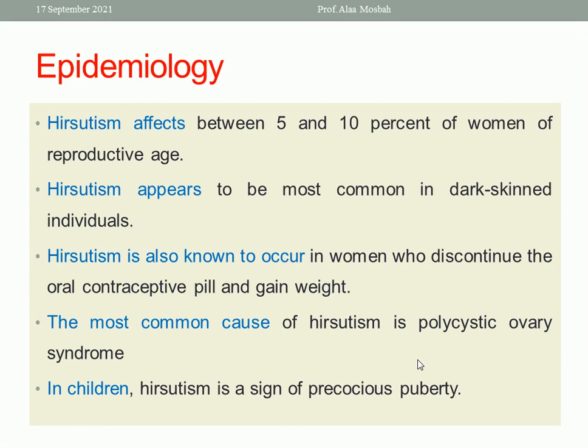Hirsutism affects between 5 to 10% of women of reproductive age and is more common in dark-skinned individuals. It commonly occurs in women who recently discontinue oral contraceptive pills and who gain weight, because obesity decreases sex hormone binding globulin, which leads to increased free testosterone, causing Hirsutism. The most common cause is polycystic ovarian syndrome. In children, Hirsutism is a sign of precocious puberty.